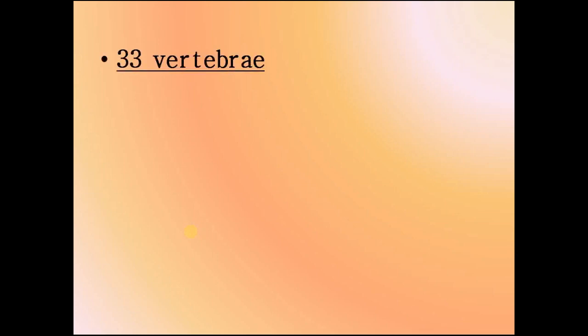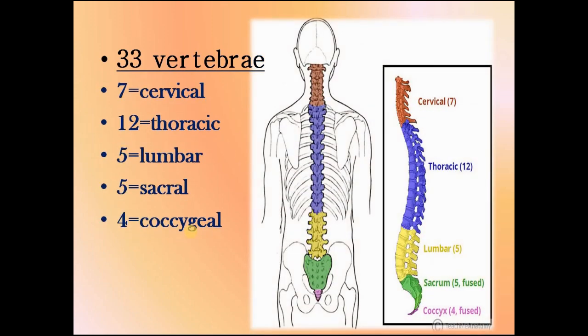First of all, let's clear the basic concept about the intervertebral disc, vertebra, and all. We all know that there are 33 vertebrae present in our back which make up our vertebral column. Of those, seven are cervical vertebrae, 12 thoracic, 5 lumbar, 5 sacral, and 4 coccygeal. The sacral and coccygeal vertebrae are both fused.